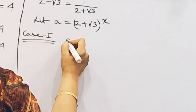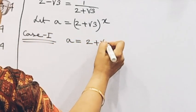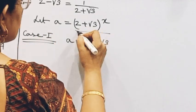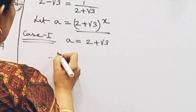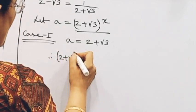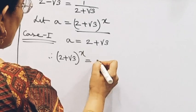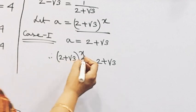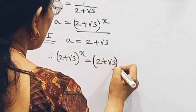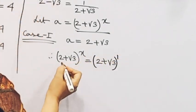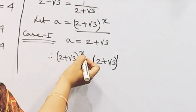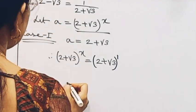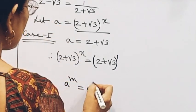Check: a equals 2 + √3, which is equal to 2 + √3. Since 2 + √3 to the power 1 equals 2 + √3, we write a to the power n equals a to the power n.